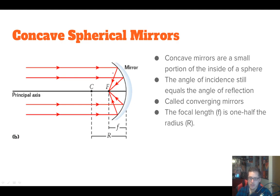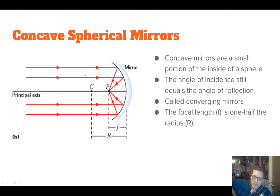Most notably, satellite dishes use this shape. The reason they're important is that any ray that comes in parallel to the principal axis — the axis that goes through the center right to the middle of the mirror — always gets reflected to a point halfway between the center and the edge of the mirror. Because satellite signals come from very far away, we can assume they're mostly parallel, and we can use this principle to focus the information and get a good signal.